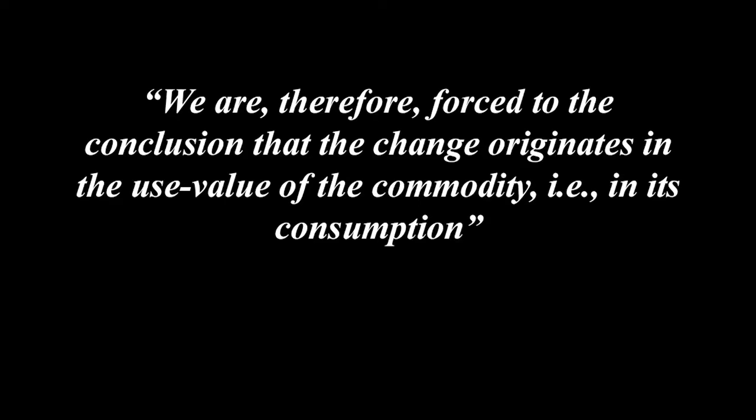In this chapter, which is mainly a continuation of chapter 5, Marx finally arrives at the solution where the surplus value in M' is created. We are therefore forced to the conclusion that the change originates in the use value of the commodity, in its consumption. As we saw in the previous chapter, Marx determined that the increase of value in M' cannot possibly occur in circulation itself.